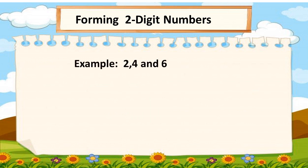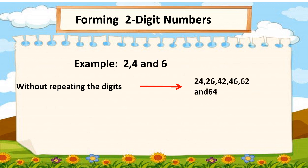Dear kids, if we have three digits: two, four and six. Without repeating the digits, we can form six two-digit numbers. These two-digit numbers are twenty-four, twenty-six, forty-two, forty-six, sixty-two and sixty-four.